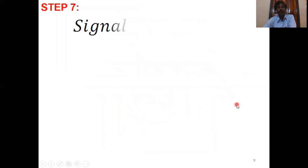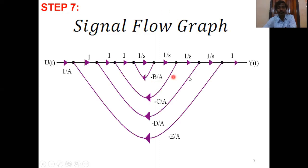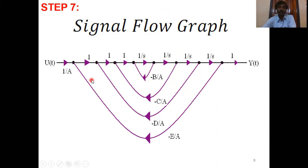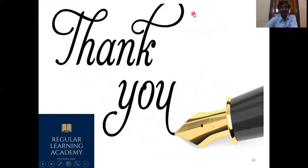Draw the signal flow graph from this equation. This is the signal flow graph for the fourth order system. There are four comparators and four integrations (1/S each), with first feedback −B/A, second feedback −C/A, third feedback −D/A, and fourth feedback −E/A. So this is the signal flow graph for a linear system model. Thank you.